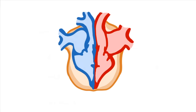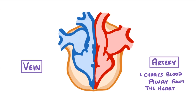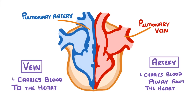Now to clear up any confusion, the term artery refers to any vessel that carries blood away from the heart, while a vein is any vessel that carries blood to the heart. Often students get confused and think that arteries have to carry oxygenated blood and veins have to carry deoxygenated blood. Although this is the case most of the time, it's not always true. For example, the pulmonary artery carries deoxygenated blood but it's still an artery because it carries blood away from the heart, while the pulmonary vein carries oxygenated blood but it is a vein because it's carrying blood to the heart.